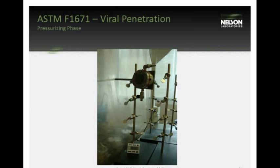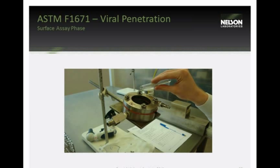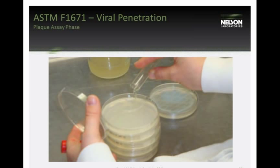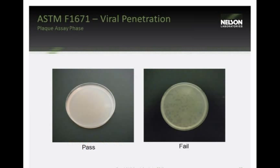At the end of the hour, the challenge is drained from the test cell. Sterile nutrient broth without virus is applied to the non-test side of the sample and swirled for one minute to recover any virus that penetrated through. That nutrient broth is recovered and placed in a test tube, then plated with E. coli and top agar and incubated overnight. If only E. coli grows, it's a pass; if plaques appear, it's a failure.